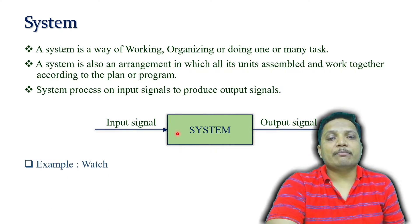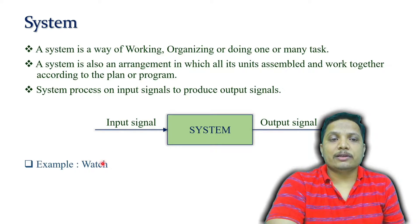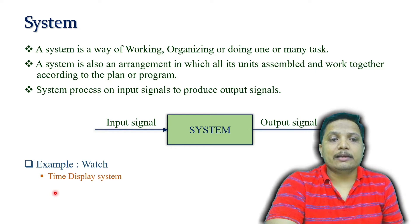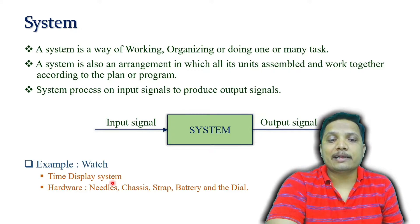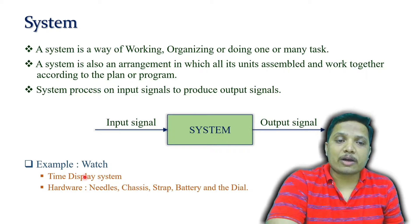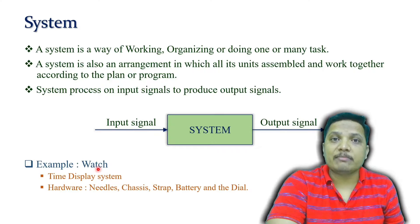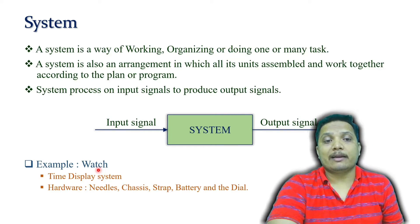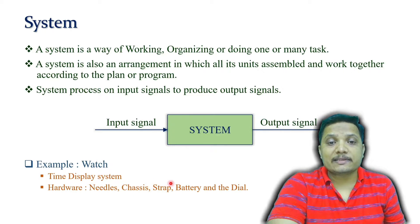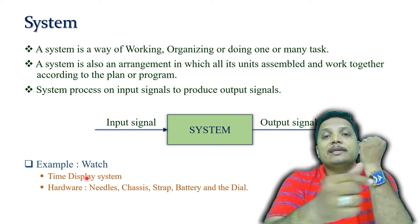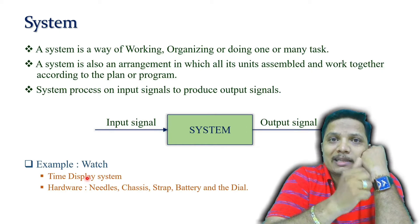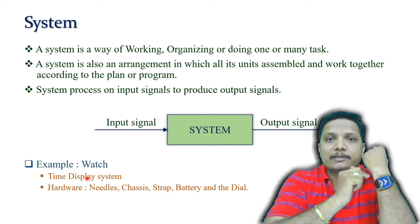Let me give you an interesting example of a watch. In a watch, the output is the display of time. To display time, the hardware elements are needles, chassis, strap, battery, and the dial. This watch example is not an example of an embedded system — it is an example of a system where these different elements are assembled together and used to display time. You can see this is a mechanical watch containing all these elements, and this is not an embedded system.